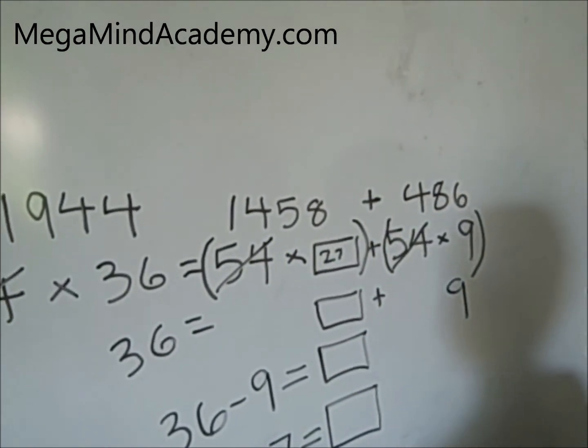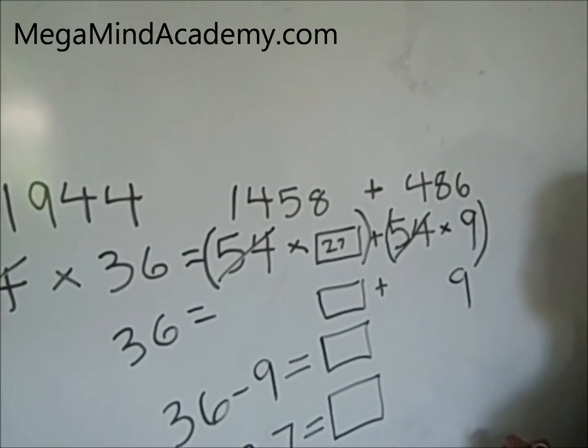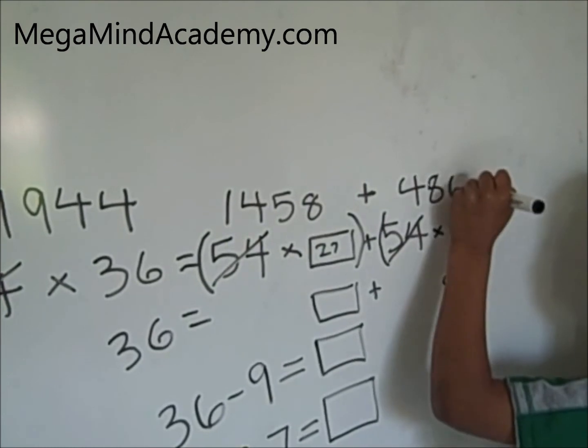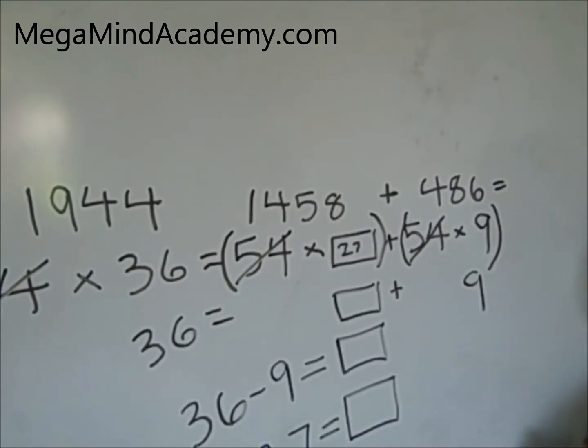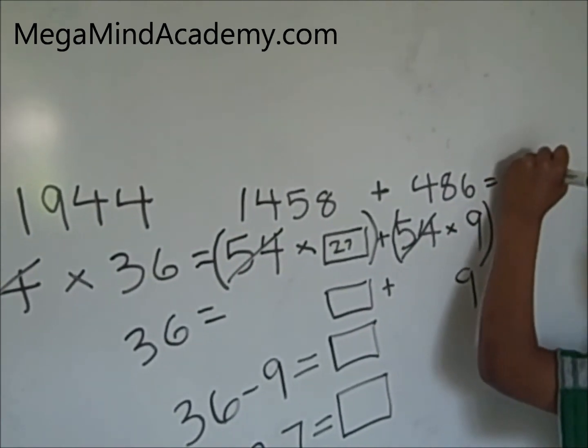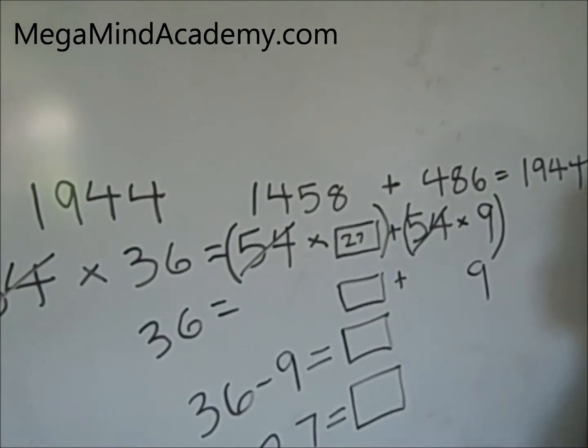1,458 plus 486 is 1,944. Bingo! So my answer is right.